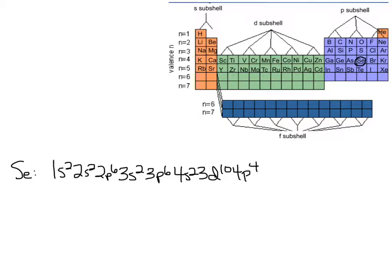The number in front represents the shell. Wherever I have a 1 in front represents the first shell — there are just 2 electrons in the first shell. For the second energy level, here's a 2 in front and here's a 2 in front; adding those exponents gives me 8. The maximum number of electrons in the first shell is 2, and the maximum in the second energy level is 8 because there are only s and p subshells together, which count as 2 plus 6.